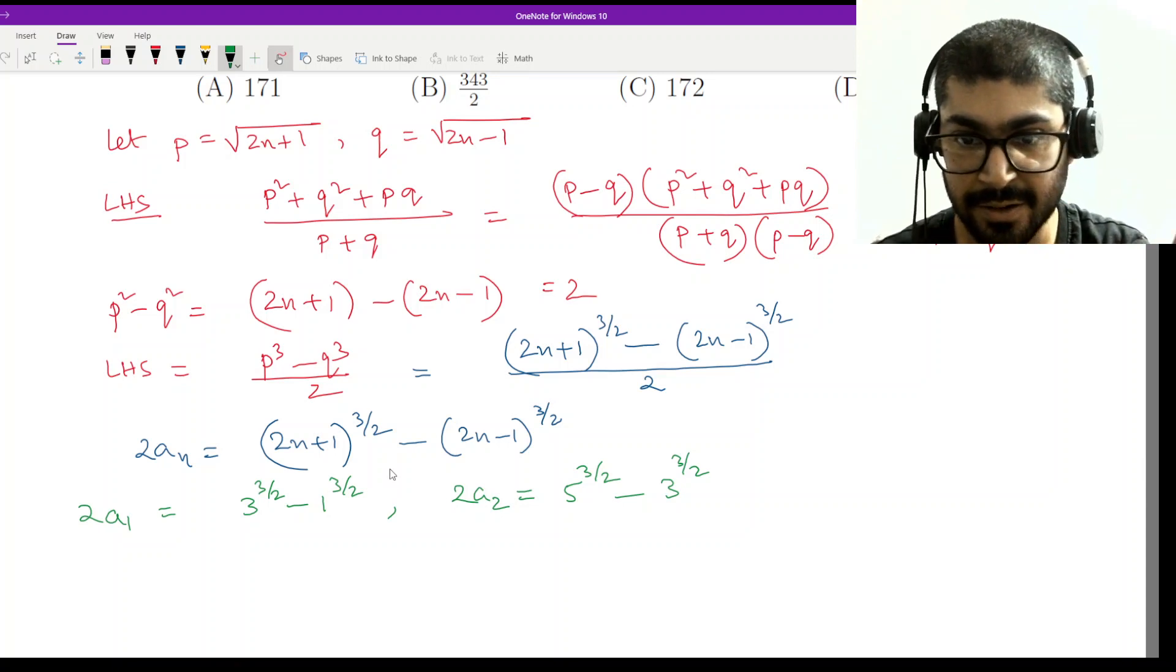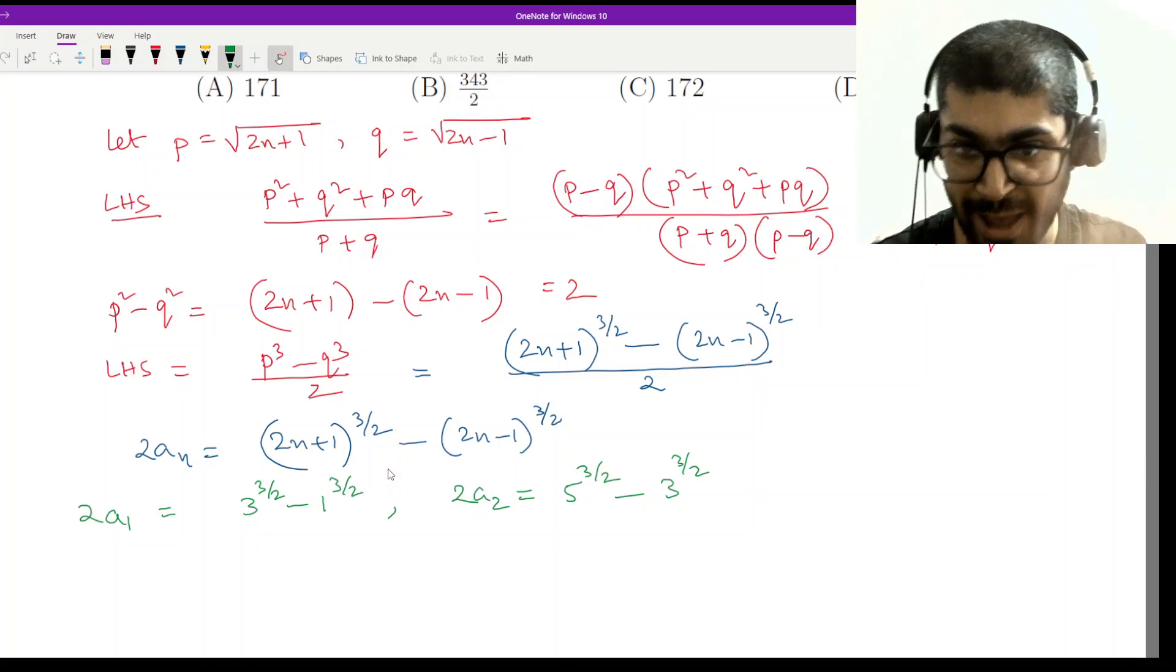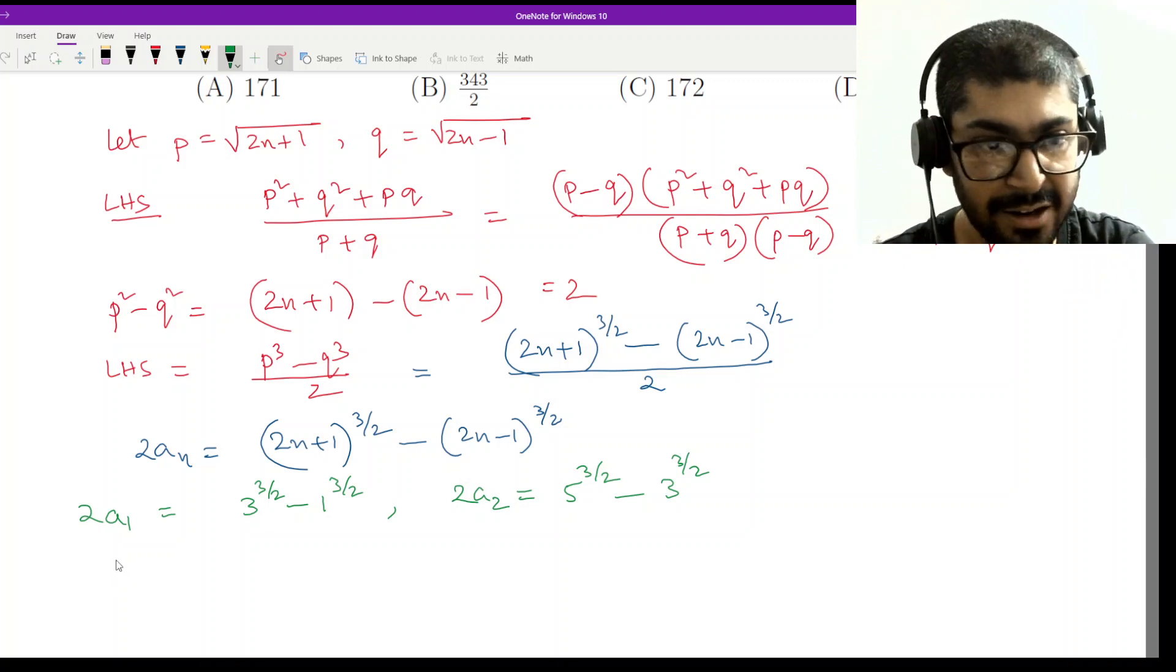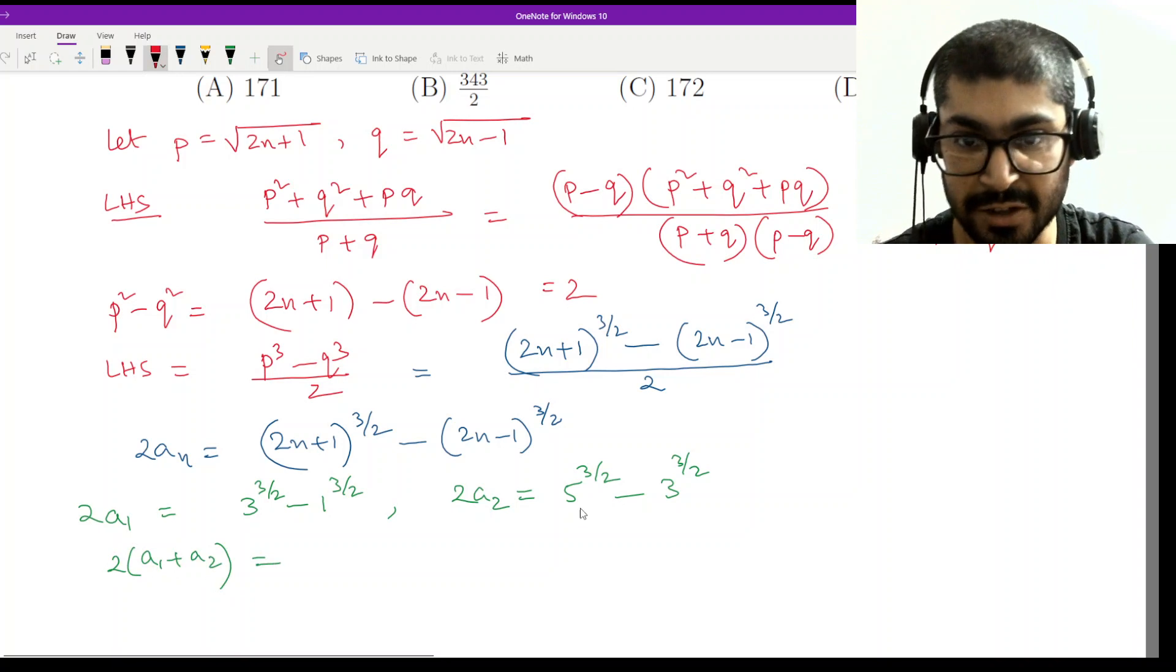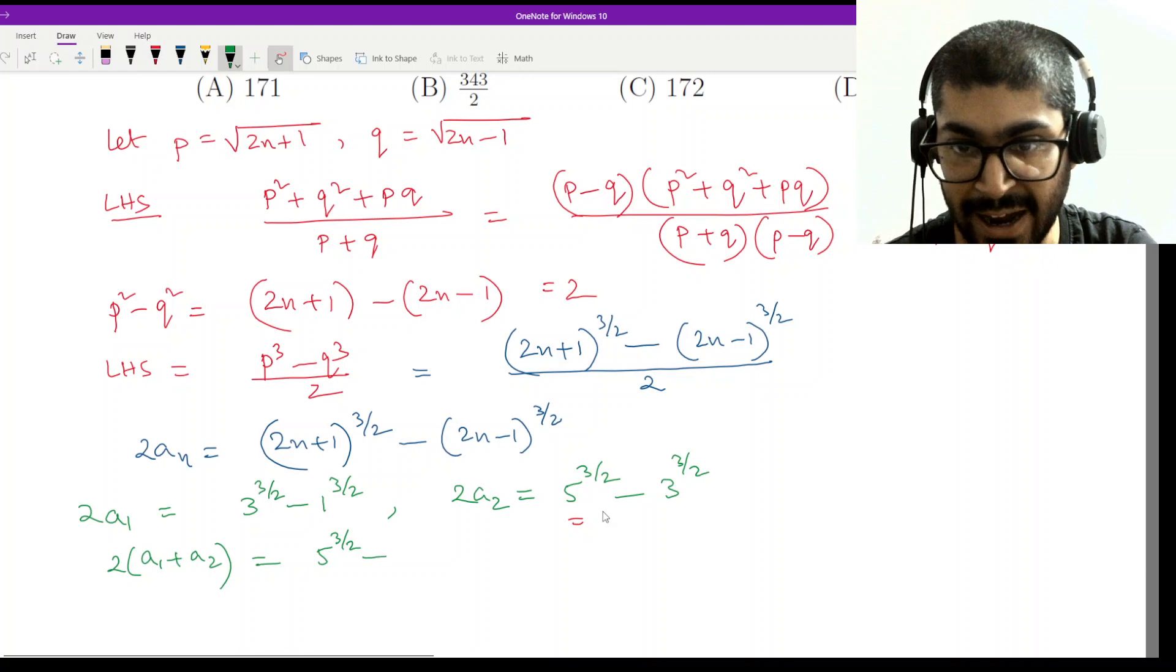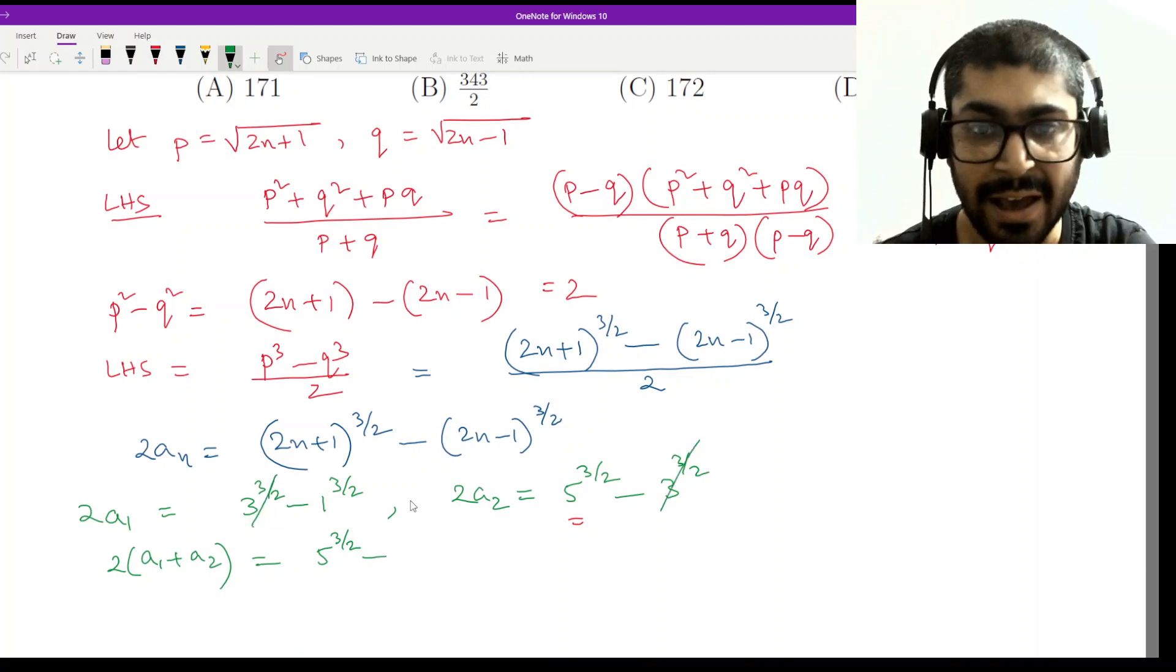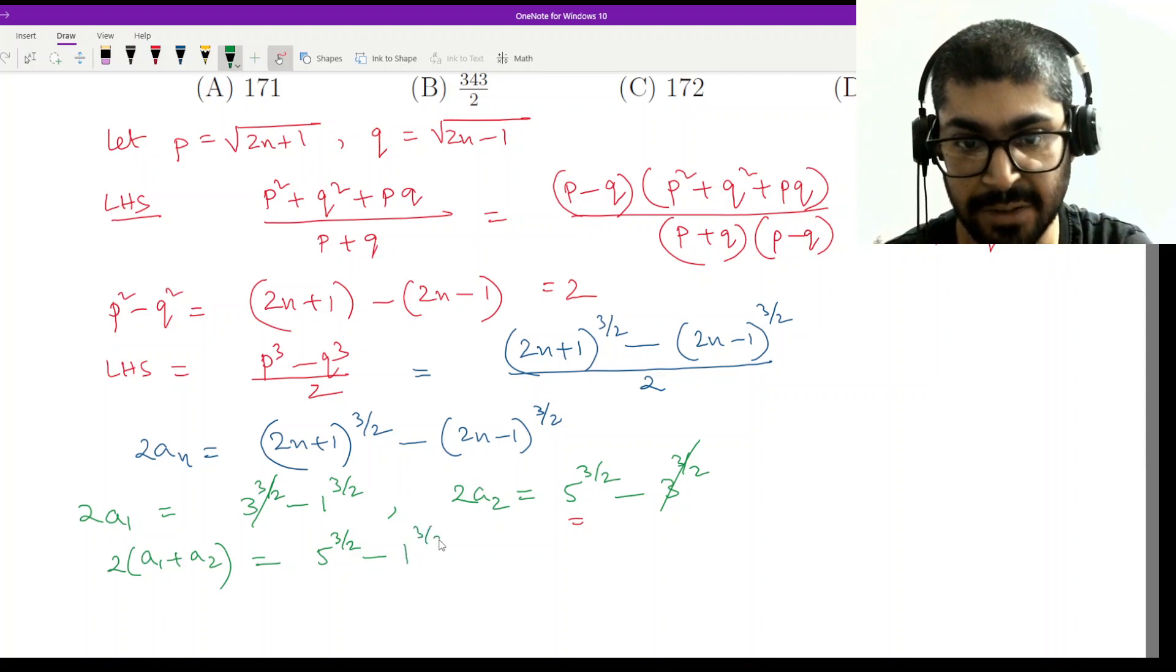I would get the first term cancelled and the last term, the leading coefficient remaining. So if I add twice of a_1 plus a_2 I'll have the initial term for the last term, this one remaining, 5 to the power 3 by 2 and the intermediate terms will get cancelled. Because I'm adding them and the second term from the first portion will remain so minus 1 to the power 3 by 2.